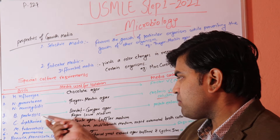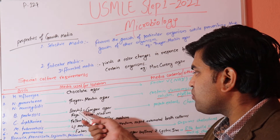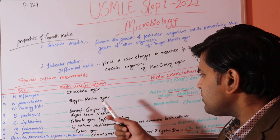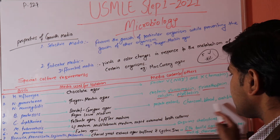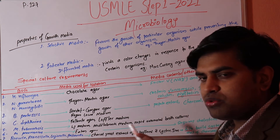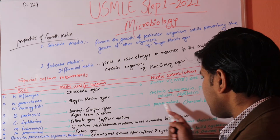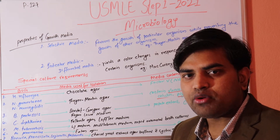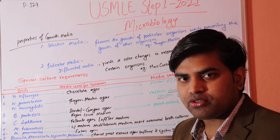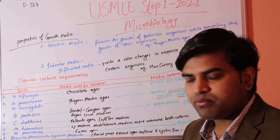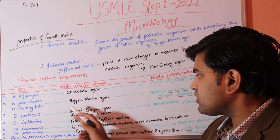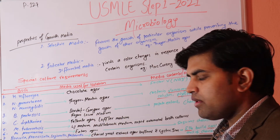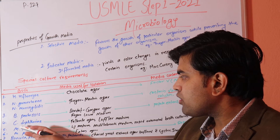Bordetella pertussis, which causes whooping cough, is grown on Bordet-Gengou agar or Regan-Lowe medium. This medium contains potato extract, charcoal, blood, and antibiotics. The charcoal serves to neutralize any toxins that could inhibit the growth of Bordetella pertussis.